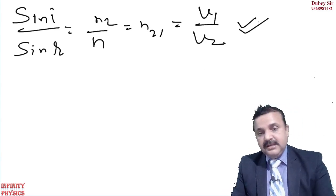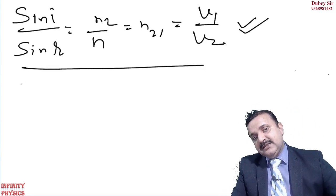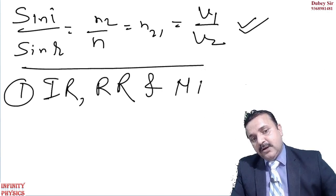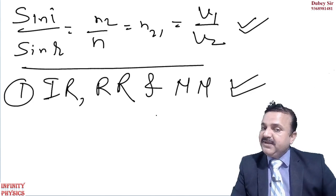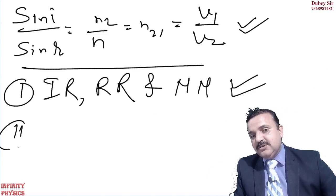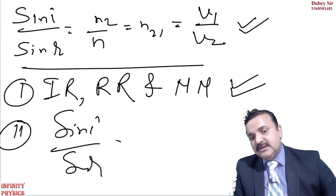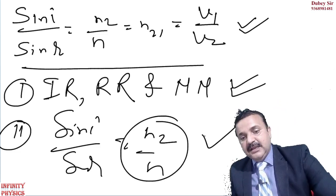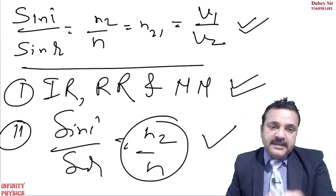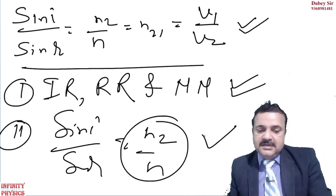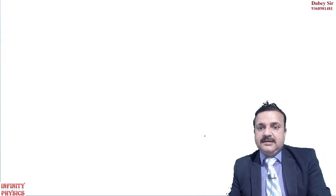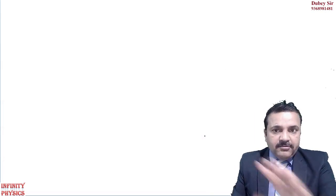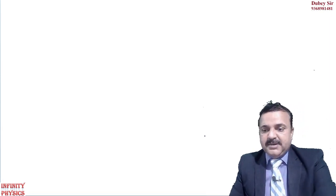For the first medium, N1 = c/V1, and N2 = c/V2. Substituting: sin i / sin r = V1/V2 = (c/N1)/(c/N2) = N2/N1. This is Snell's law: sin i / sin r = N2/N1 = N21 = V1/V2. So on the basis of Huygens' principle we have proved Snell's law — the law of refraction. The first law states incident ray, refracted ray and normal lie on the same plane; the second is sin i / sin r = N2/N1. We will discuss the next part in the next video. Thank you so much.